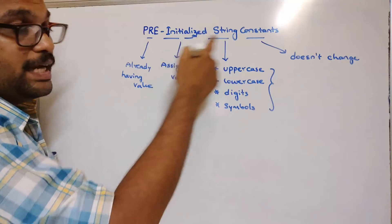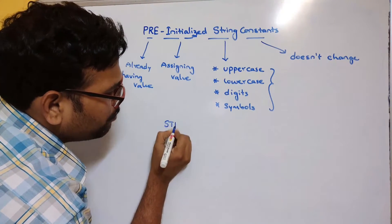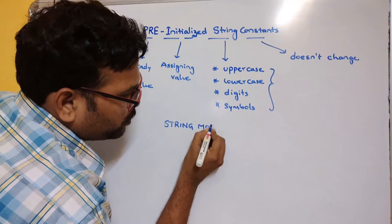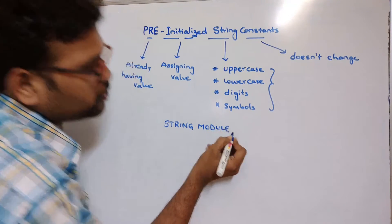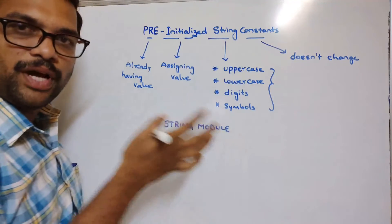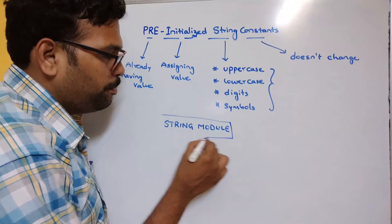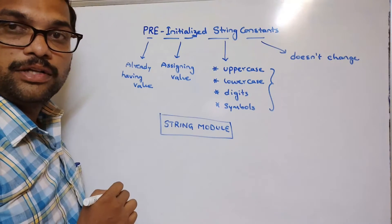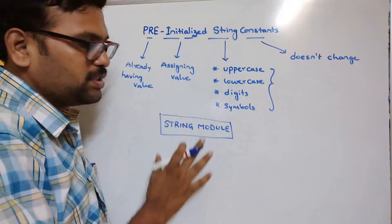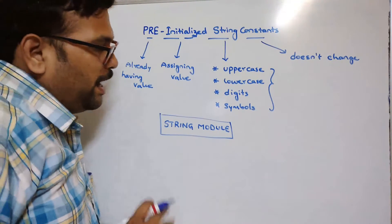In strings, we have pre-initialized string constants. These are mainly available in the string module. If you want to use all the pre-initialized string constants, first we have to import the string module, and then only we can use them.